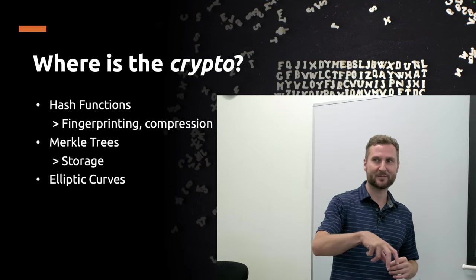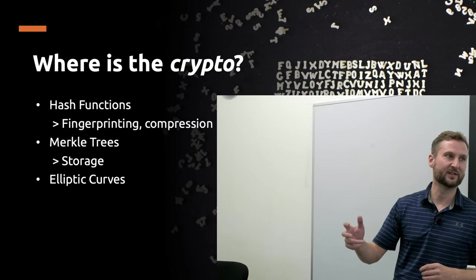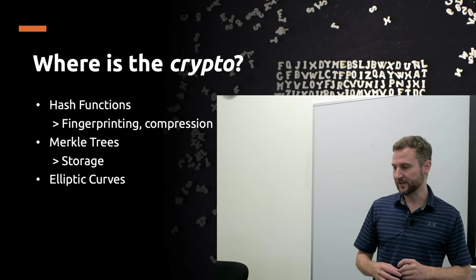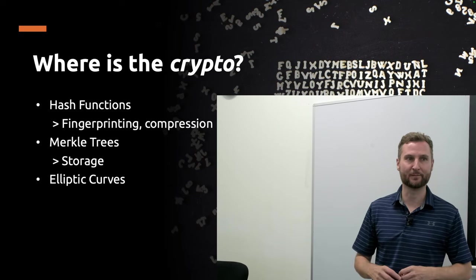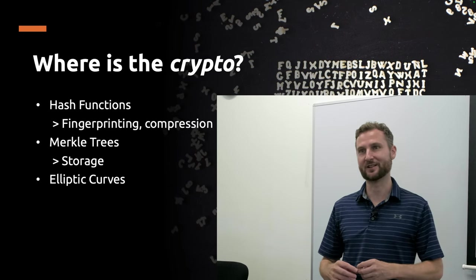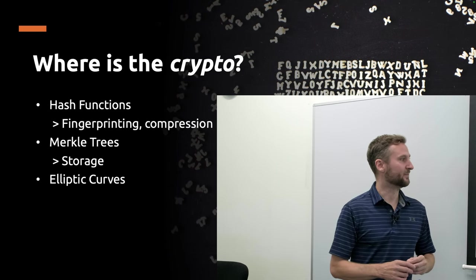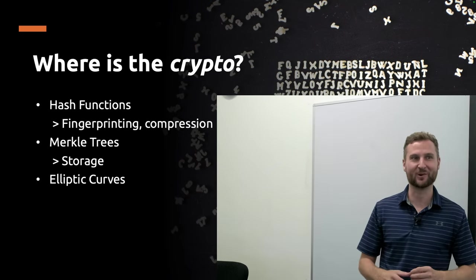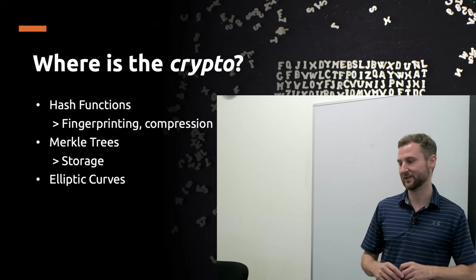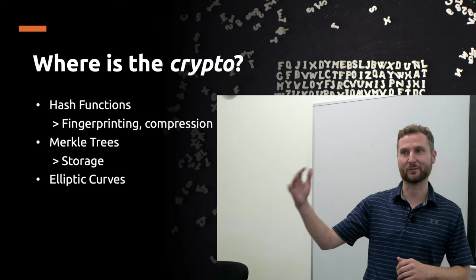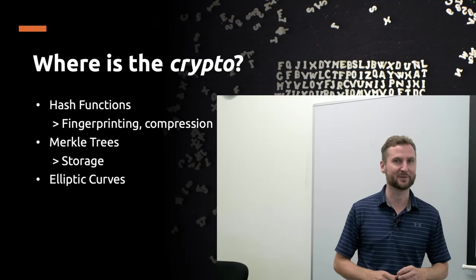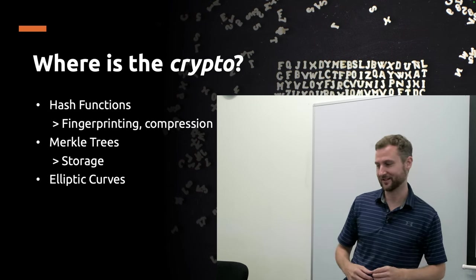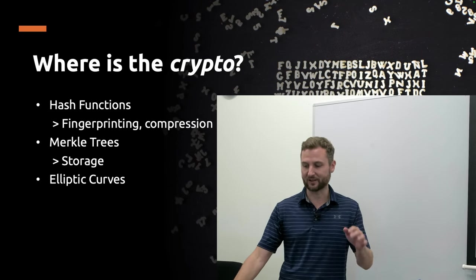Remember the digital abundance problem — it's easy to copy and paste stuff. Data is really cheap; data storage is only getting cheaper. The marginal cost is effectively zero of making more data. In the context of money, we want a money system where people can't just create more of it. If somebody in the future can create more Bitcoin, the whole system is broken immediately. So there must be some math behind this.